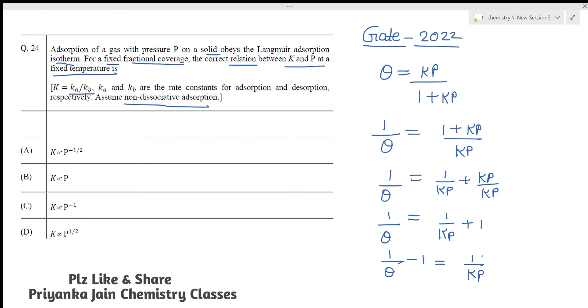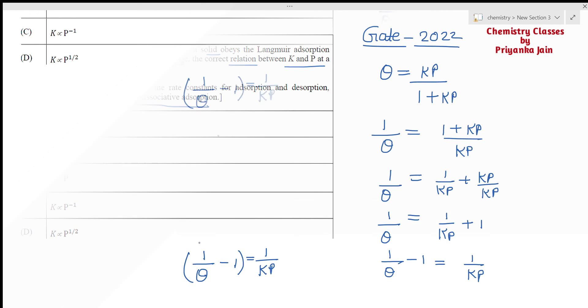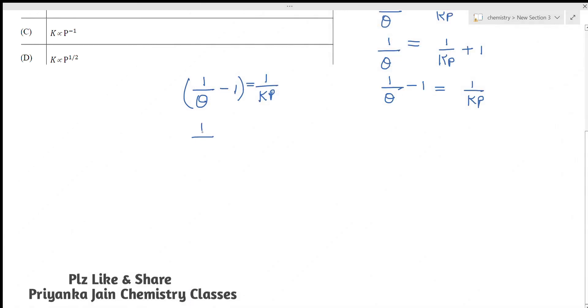Now you can write this in this manner: 1 upon theta minus 1 is equal to 1 upon Kp. So now take its reciprocal. So what you are getting? 1 minus theta upon theta will be equal to Kp. Take this P to this side. 1 minus theta upon theta will be equal to P inverse 1, and then this is equal to K.